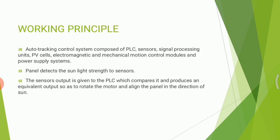The block diagram shows sensors, amplifier, PLC, relay, and stepper motor. The working principle: the auto tracking control system is composed of PLC, sensors, signal processing units, PV cells, electromagnet, mechanical motion control modules, and a power supply system.